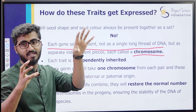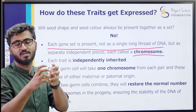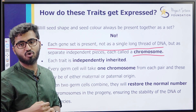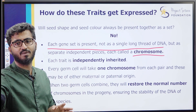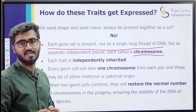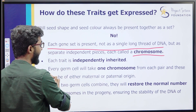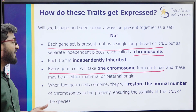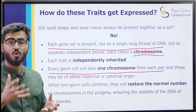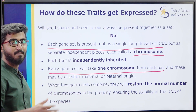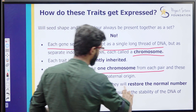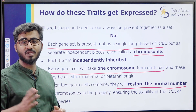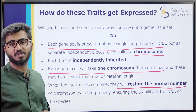Each trait is independently inherited. Color and shape are on separate chromosomes so they go in equal but independent ways. Each trait inherits independently on one chromosome. Every germ cell will take one chromosome from each pair - maybe either from maternal or paternal. Parents give one from each pair, and this restores the normal number of chromosomes in the progeny.